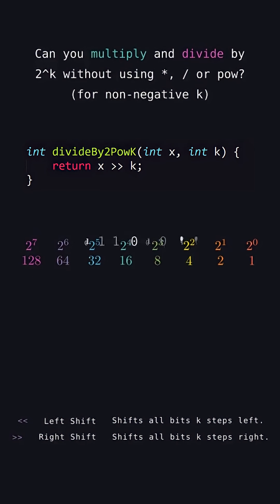And since dividing is the inverse of multiplication, dividing by 2 to the k is the equivalent of shifting the bits back k spots to the right. You can think of dividing by 2 to the k as being the same as multiplying by 2 to the negative k.